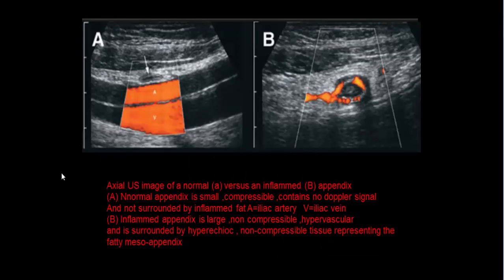Comparing normal versus inflamed appendix on ultrasound: a normal appendix is small, compressible, shows no Doppler signal, and is not surrounded by inflamed fat. The external iliac artery and veins serve as landmarks, with the appendix lying anterior to them. An inflamed appendix demonstrates Doppler flow, lack of compressibility, hypervascularity, and is surrounded by hyperechoic peri-appendiceal fat with non-compressible fatty meso-appendix.